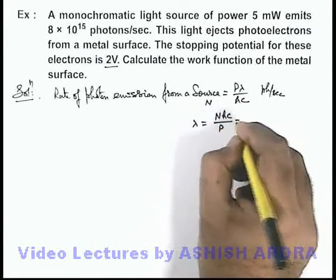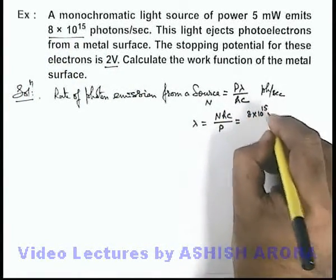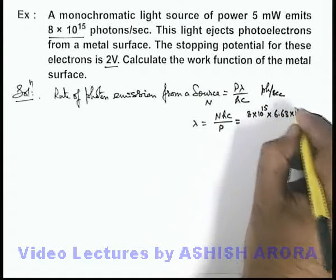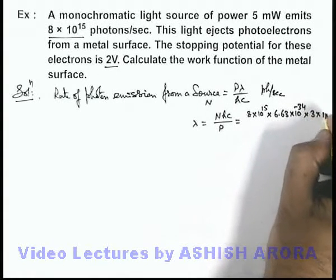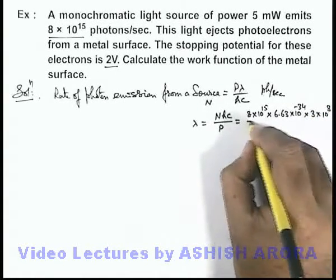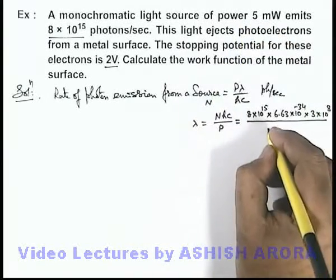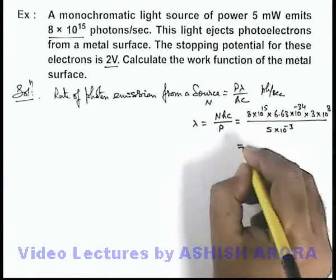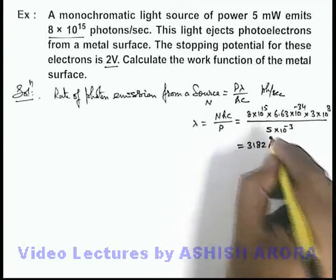So if we substitute the values: the number of photons per second is 8 × 10¹⁵, multiplied by h = 6.63 × 10⁻³⁴, multiplied by c = 3 × 10⁸, divided by the total power of the beam which is 5 × 10⁻³. On simplifying, we get the value of wavelength as 3182 Å.